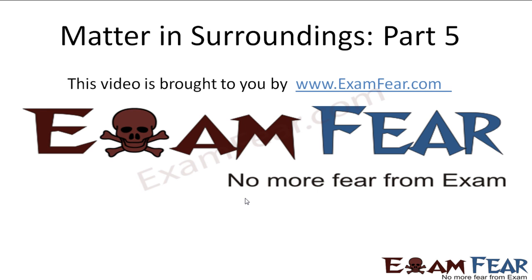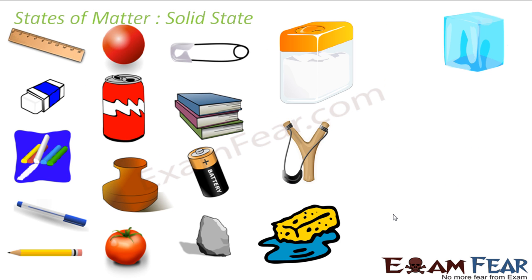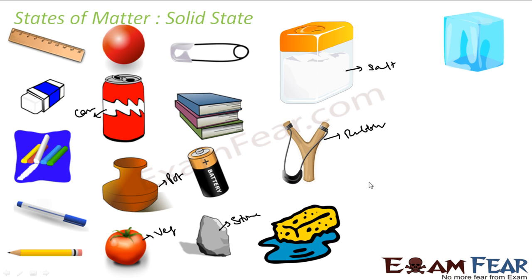This video on matter and surroundings part 5 is brought to you by ExamFear.com. Let's see some of the solids in our day-to-day life. For example, a scale, pen, pencil, cricket ball, tin can, pot, vegetables, stone, battery, books, salt, rubber, sponge, and ice.